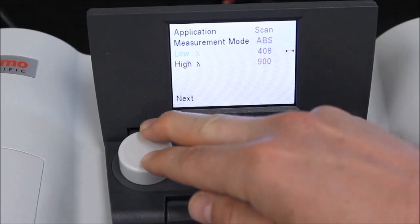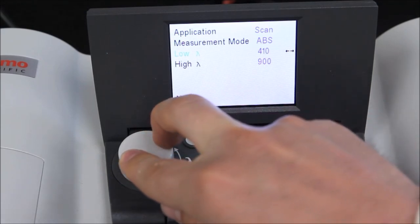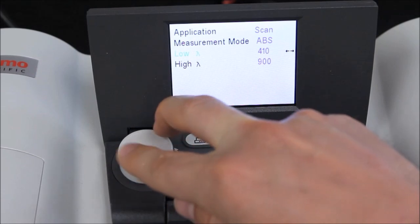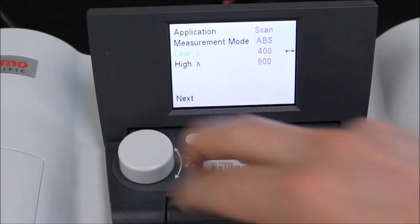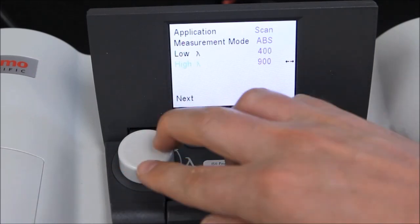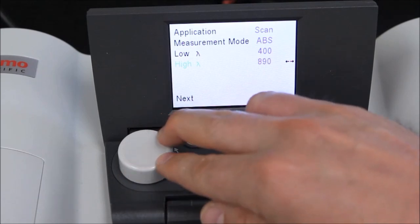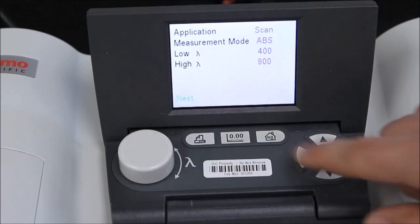By pushing down on the knob and turning it, we can increase or decrease the wavelength in 1 nanometer increments. When we are satisfied with the scan settings, navigate to Next and press Enter.